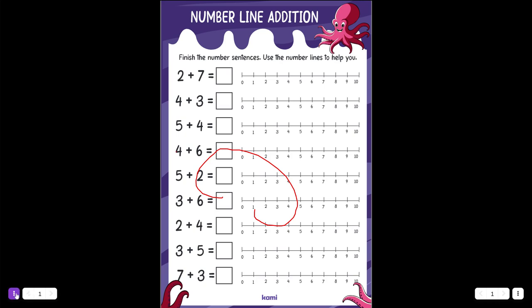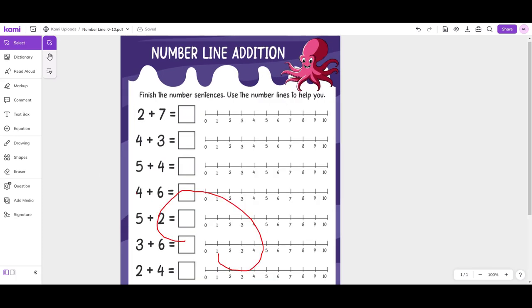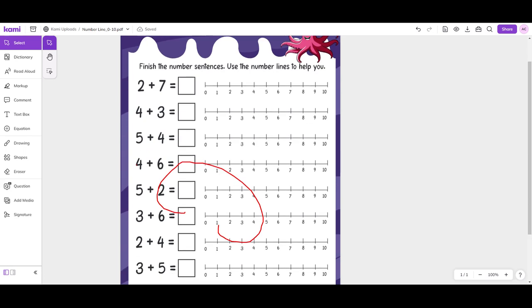And then to get out of presentation mode, again, you just click the three dots and then click this little exit button and you're back to your original document. And you'll see that any of the annotations you made during presentation mode are going to be kept here on the document.